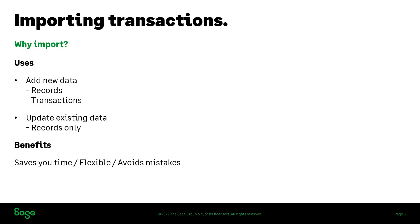Importing has two uses. One is to add new data into your accounts — that covers both adding new records and adding new transactions, and it's the transactions element we're looking at today. The second use is to update existing data, but that can only be used on the record side of things. For example, if you wanted to update credit limits on your customer records, you could import that information rather than going through records one at a time.